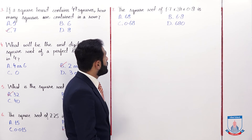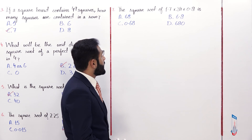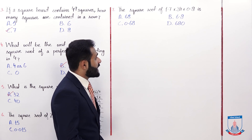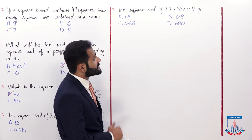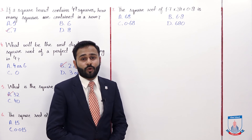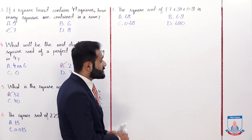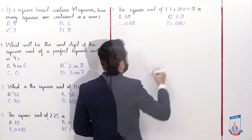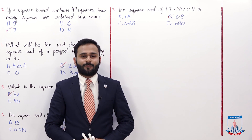MCQ number 7: the square root of 1.7 × 34 × 0.8. Options are a) 68, b) 6.8, c) 0.68, and d) 680. First multiply all the values: 1.7 × 34 × 0.8, then take the square root of the result. The answer is 6.8, so the correct option is b.